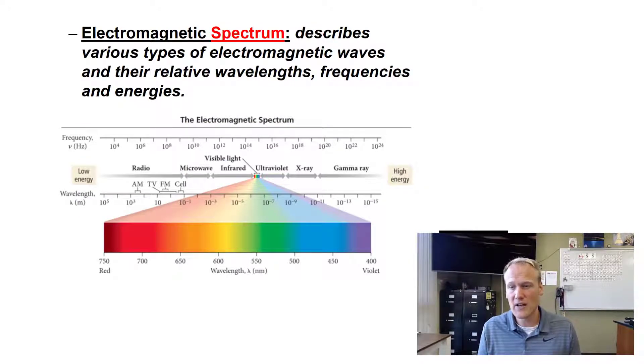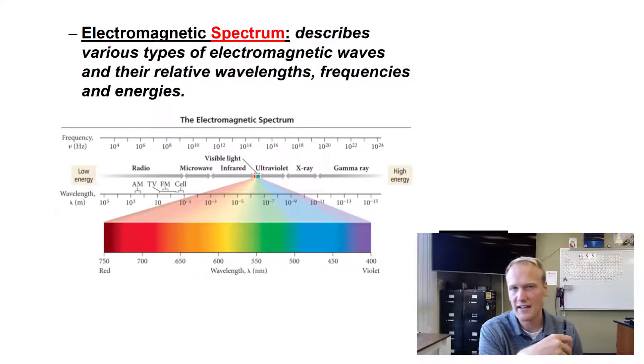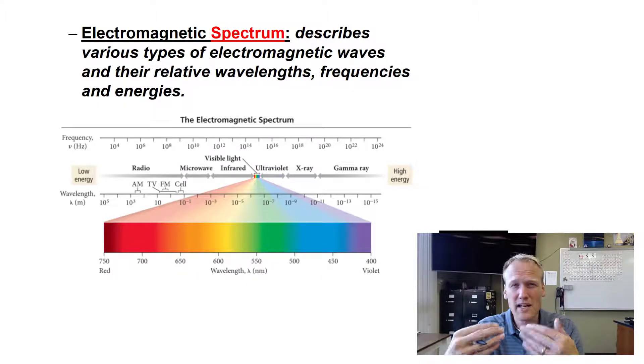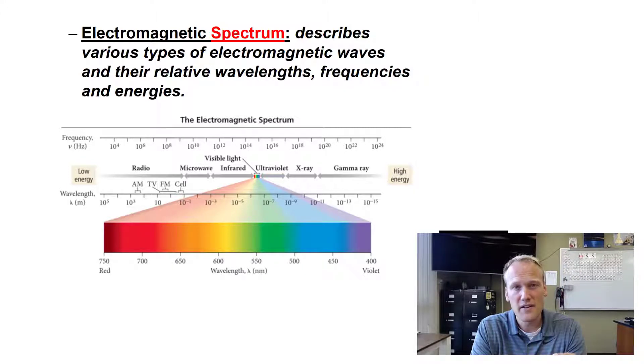We only see visible light, which is a very small part of that spectrum. But we have high energy waves like gamma, x-ray, and ultraviolet. We typically think of those as more dangerous types of waves. They have higher frequencies and the ability to mutate DNA. Then we have infrared, microwaves, and radio waves at the other end of the spectrum.